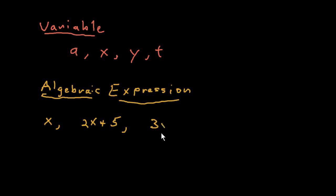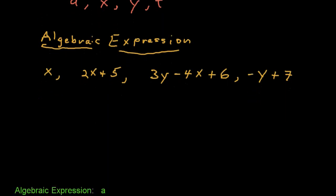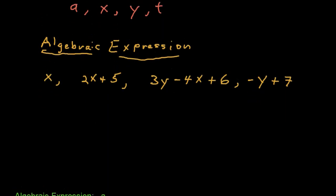Notice that there's some multiplication and addition going on. In this case, three Y minus four X plus six. Another algebraic expression. Negative Y plus seven. A fourth algebraic expression. So, those are examples of algebraic expressions. You see variables in there, constants in there, operations in there.